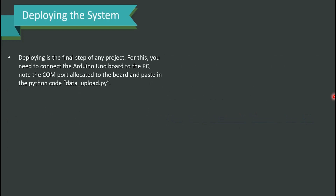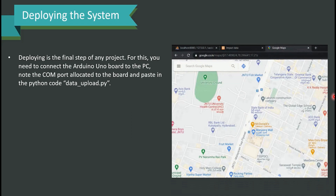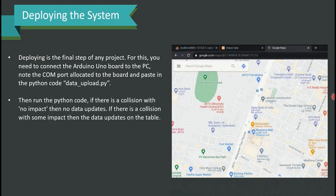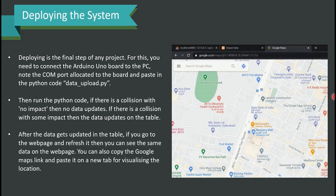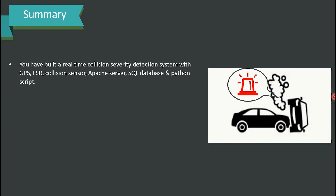Deploying the system is the final and most important step. Connect the Arduino Uno board to the PC, note the COM port allocated, and paste it in the Python code file data_upload.py. To run the Python code: if there is a collision with no impact, no data updates; if there is a collision with some impact, the data updates in the table. After the data gets updated, go to the webpage and refresh it to see the data. Copy the Google Maps link and paste it in a new tab to visualize where exactly the accident happened. You have now built a real-time collision severity detection system with GPS, FSR, collision sensor, Apache server, SQL database, and Python script.